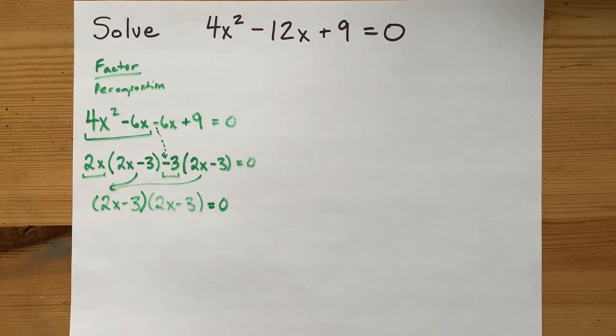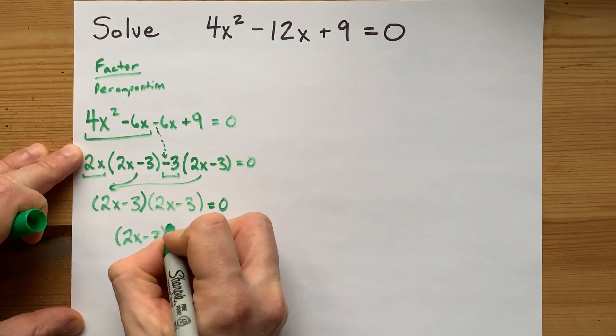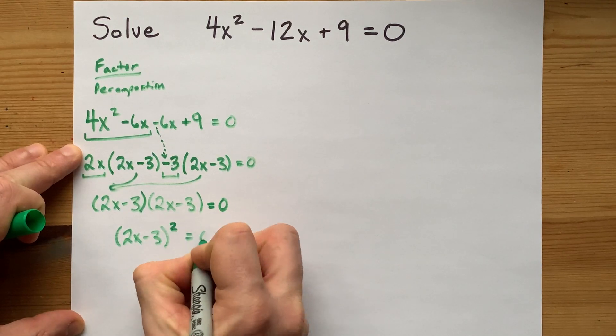You might note that those are the same thing. So you can write it as 2x minus 3 times itself. That's squared equals 0.